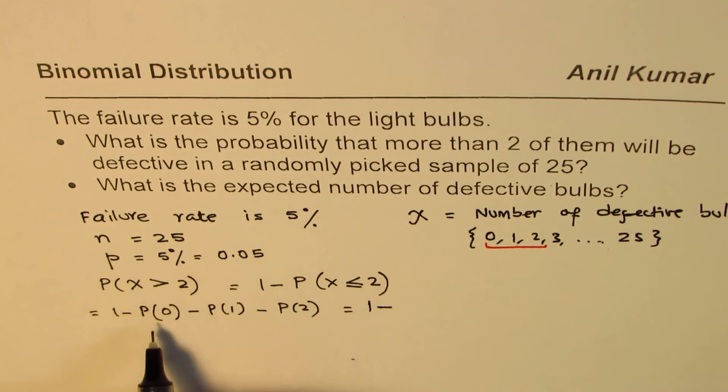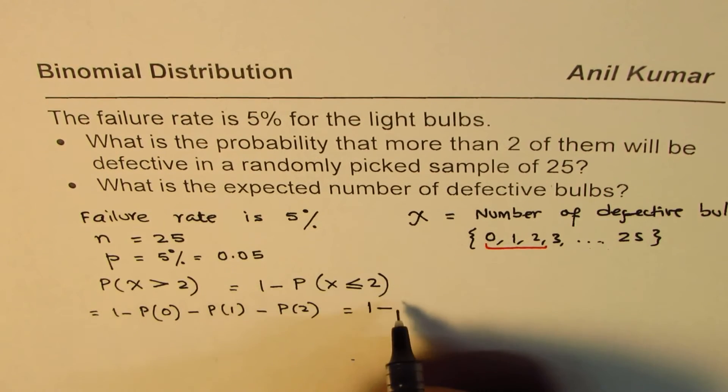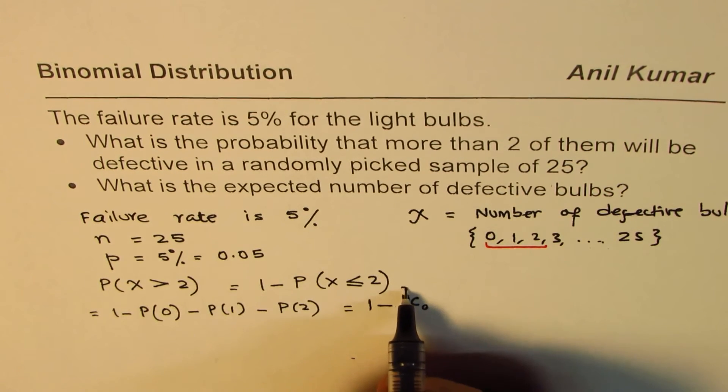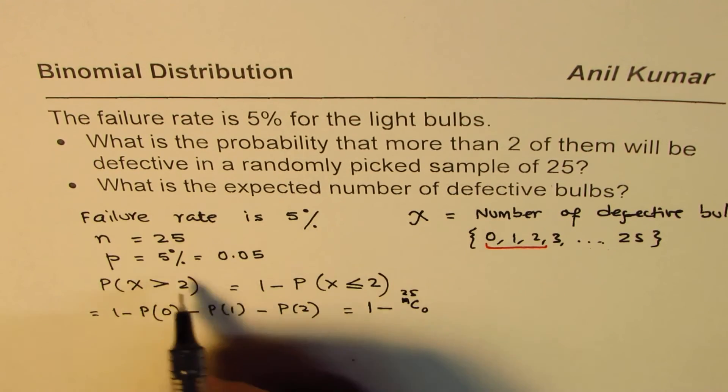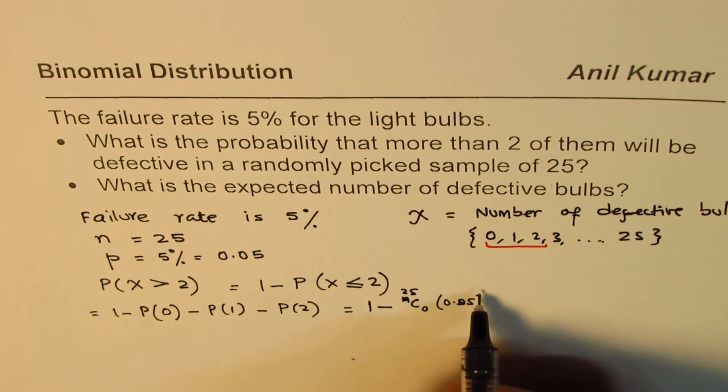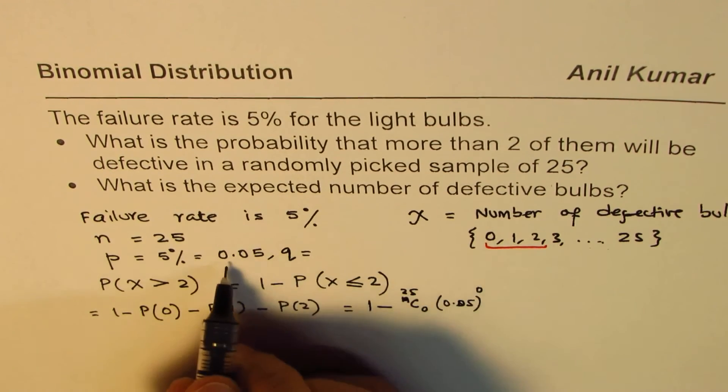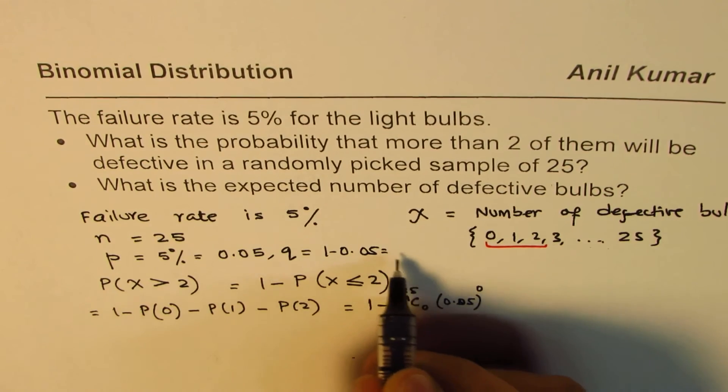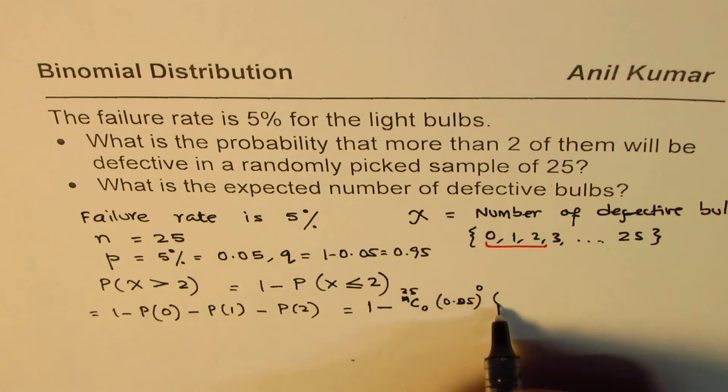This probability is 1 minus, if 0 is defective that means all are good. So we have 25C0 times 0.05 to the power of 0 times 0.95 to the power of 25. That is for 0 defective. For 1 defective, we take away